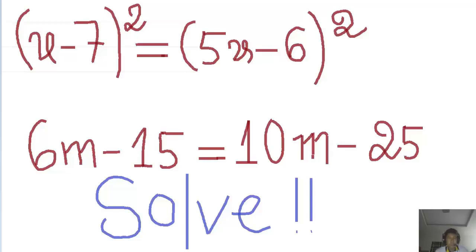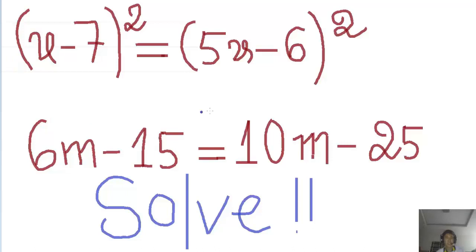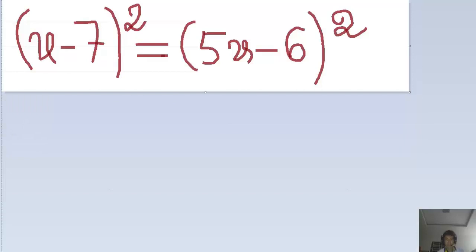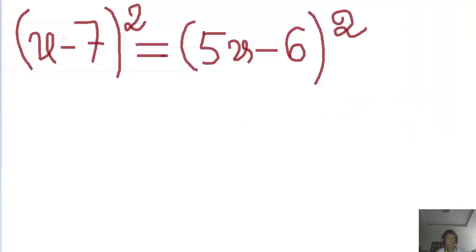Hello, hello all together, happy to see you again. Today we show you about a mathematics exercise. There are two parts, A and B, and I will show you one by one. Now we start from A. The topic of A is: minus 7x squared equals 5x minus 8 minus 6x squared.